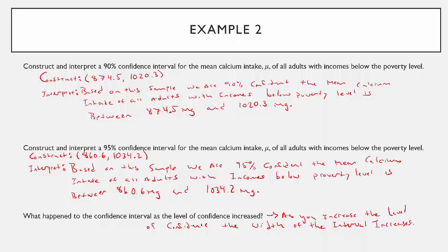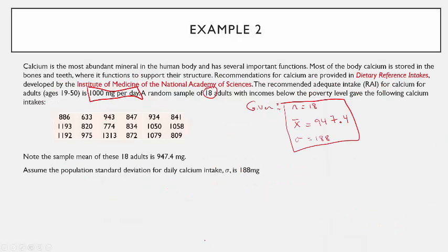We'll follow up this lecture when we talk next about constructing confidence intervals for a population mean when the population standard deviation is not given. When you're not given sigma, you'll have to use S, the sample standard deviation, to estimate it, which will introduce us to what's called the Student's t-distribution.